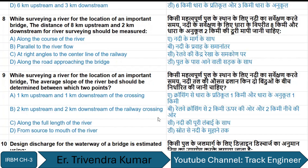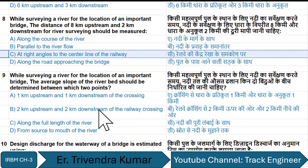The distance of 8 kilometers upstream and 2 kilometers downstream for river surveying should be measured at right angle to the center line of the railway.